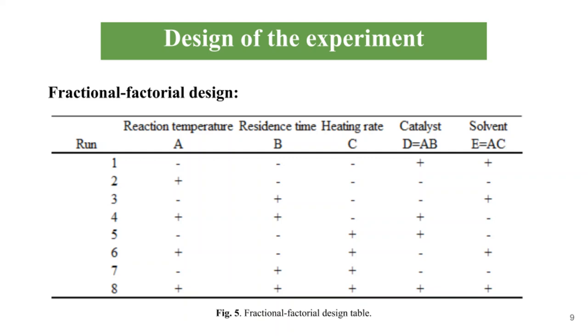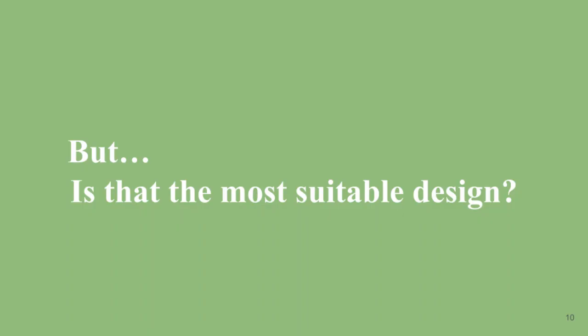This is how the fractional factorial design would look with the 8 runs and the letter order of the factors, along with the generators to calculate all the possible aliases.